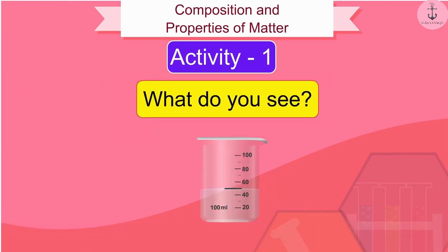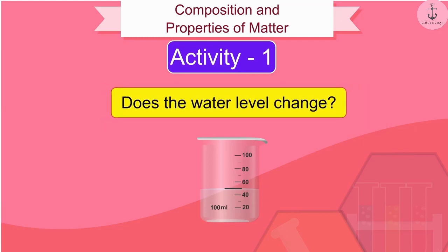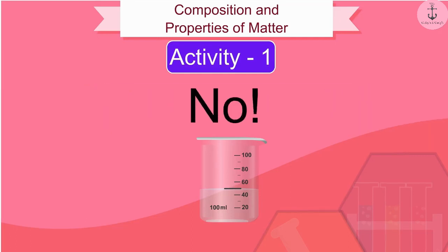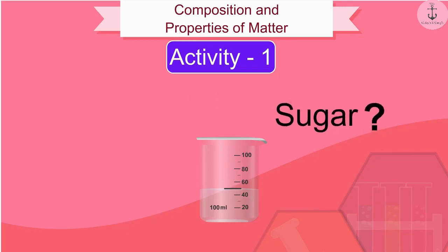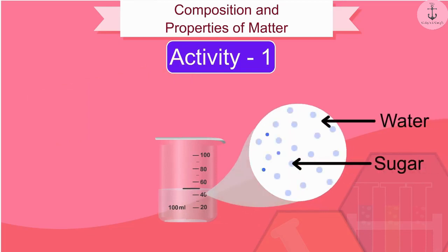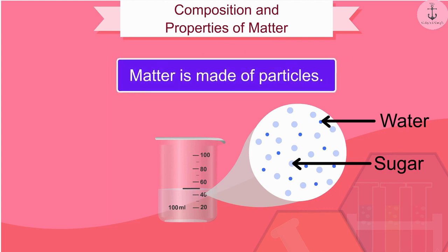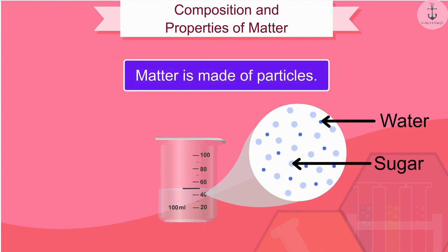What do you see? Does the water level change? No. How did this happen? What happened to the sugar dissolved in the water? When we dissolve sugar in water, the particles of sugar get into the spaces between the particles of water. From this activity, we can conclude that matter is made of particles.